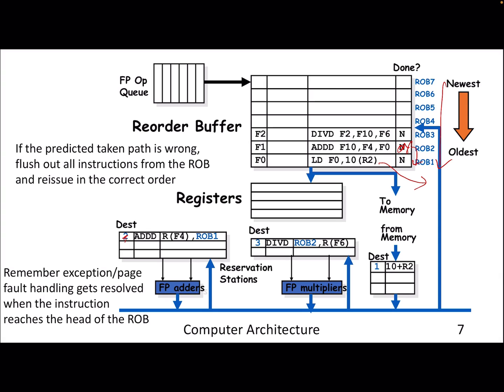Correlating with page fault handling: if something goes wrong in the pipeline, this is where you handle all micro-architectural operations. For a page fault, you resolve it once the instruction reaches the head of the ROB and then check whether it is on the right or wrong path. The same applies to stores, exceptions, and wrong branch predictions — in all these cases you squash the entire ROB and start fetching fresh instructions from the issue queue. The common data bus is still present and used by everyone, including the ROB.